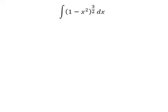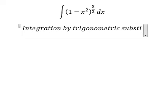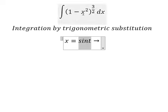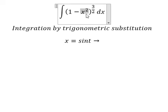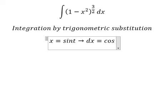Hey guys, welcome back to my channel. Today I want to show you how to answer this one. We can use integration by trigonometric substitution, so I will put s equals to sin(t). If I put this in here, we have sin(t) squared, and then 1 minus sin(t) squared, which we change for cos(t) squared. We simplify the power 3/2, and dx equals cos(t) dt.